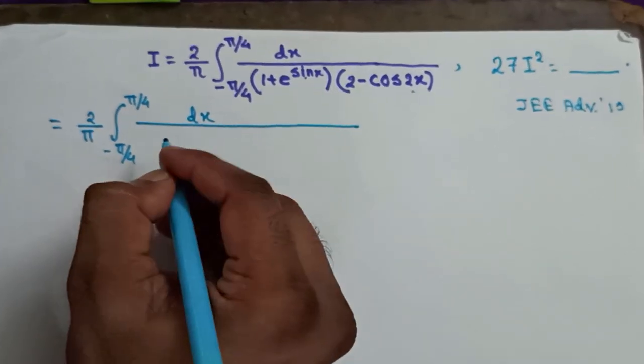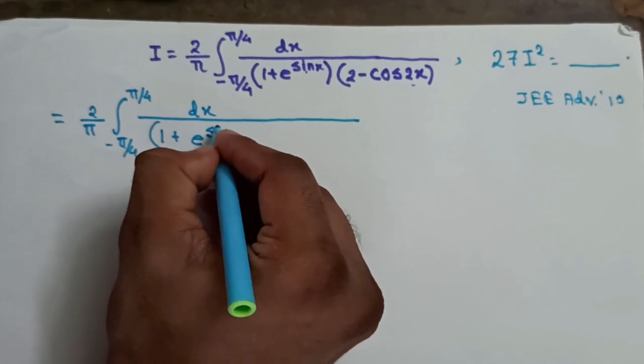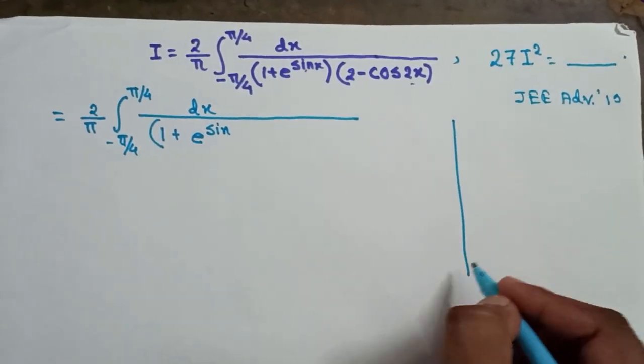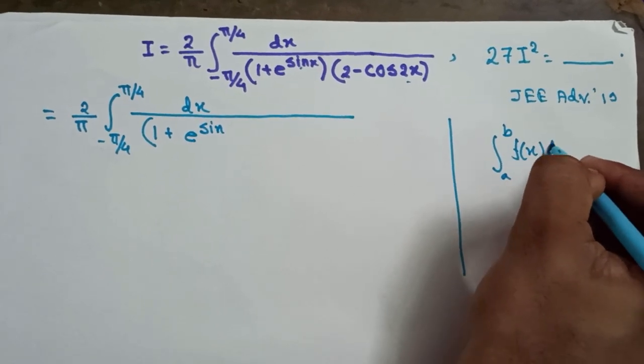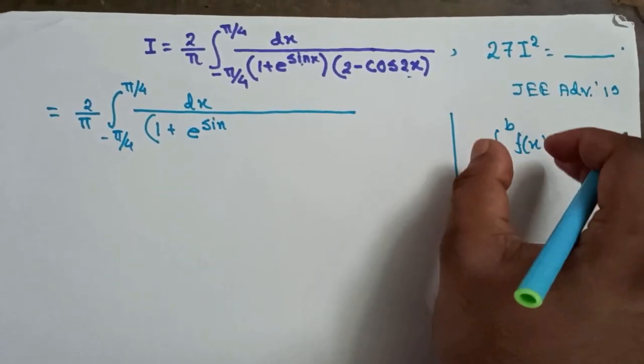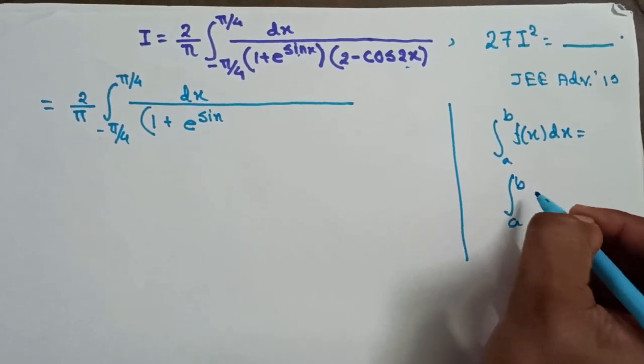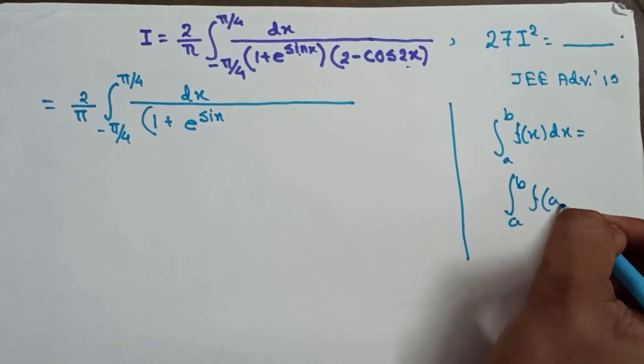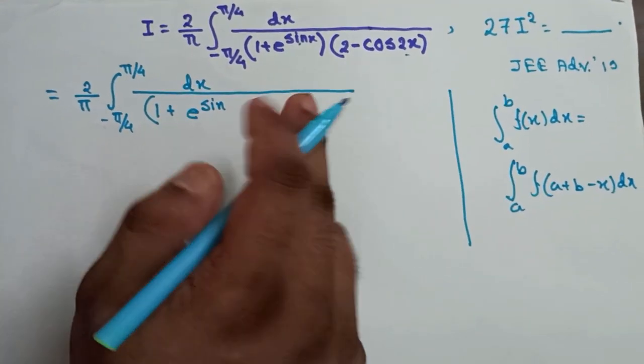If you do not know what it is, nothing is in the name, but you should know how to use it and where to use it. The property is: if integration a to b f(x) dx, this is equal to integration a to b f(a+b-x) dx. That is the property we are going to use here.